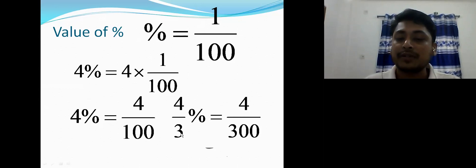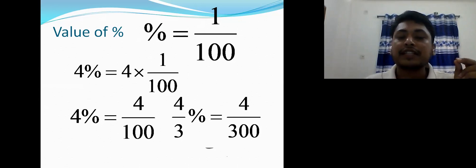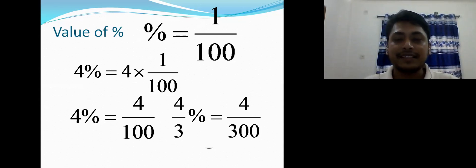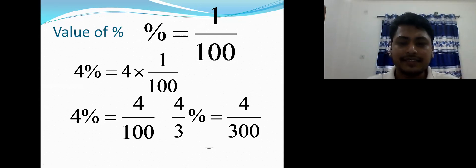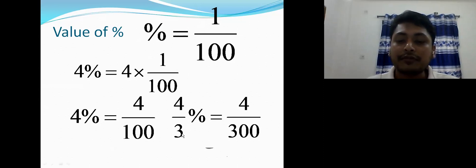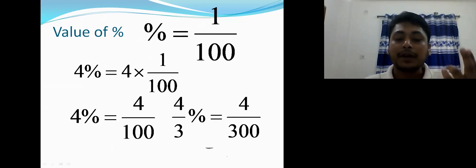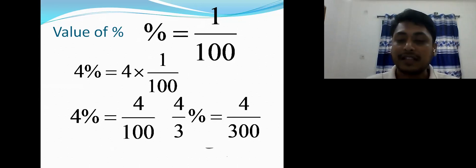The technique is: the denominator of the percentage fraction gets multiplied by 100. So 4/3 percent equals 4/300, because 3 × 100 = 300. I hope you understood. Now let's go to the maths: 30 percent is given. It can be written as 30/100. Cancel the zeros: 30/100 reduces to 3/10.